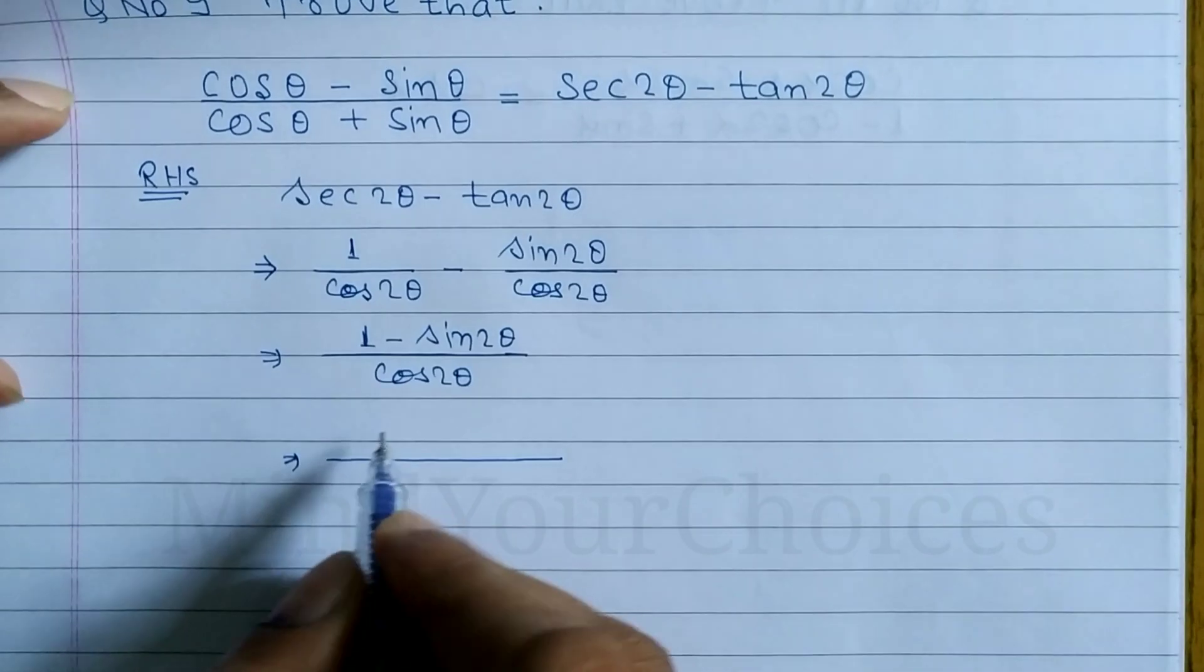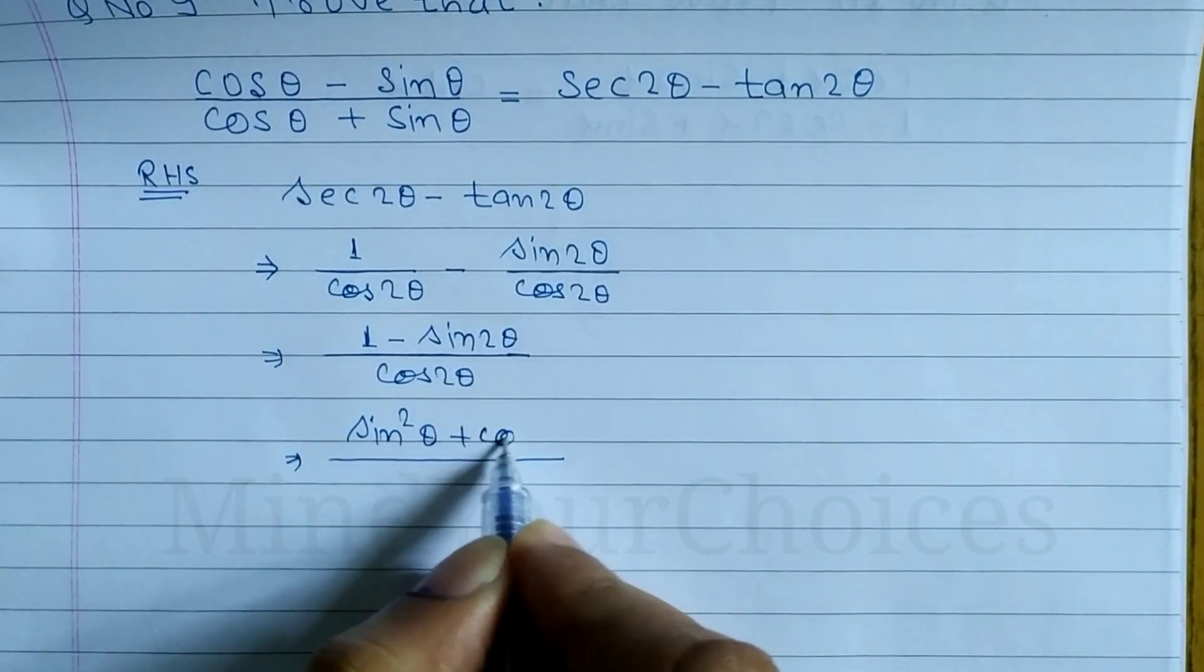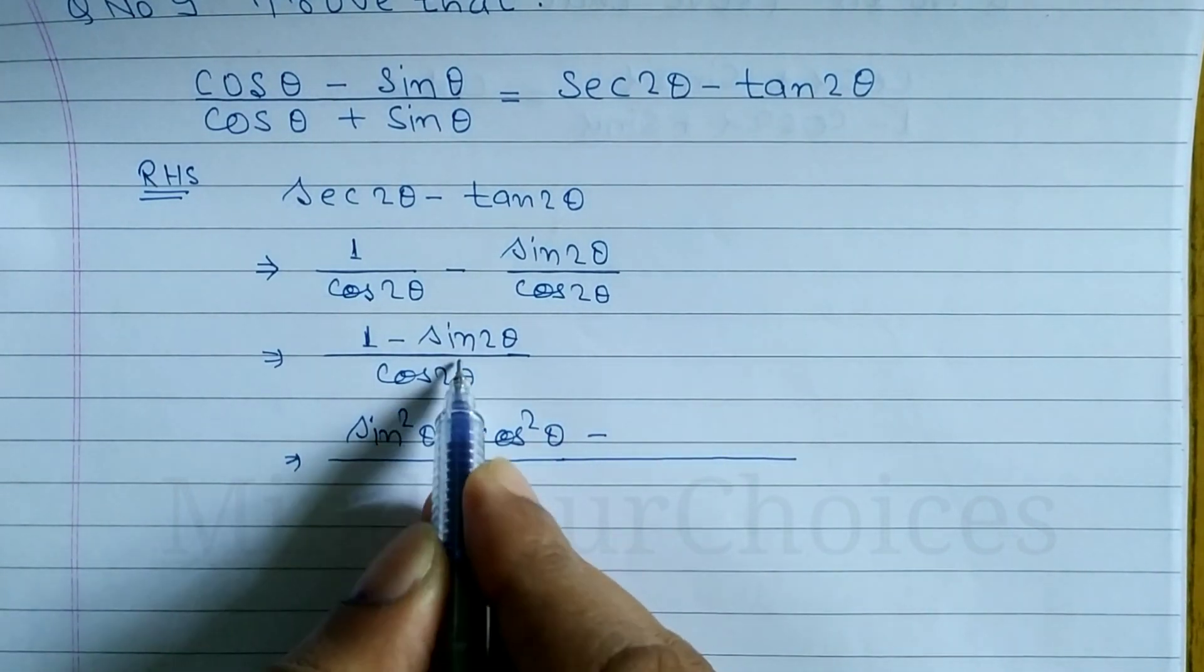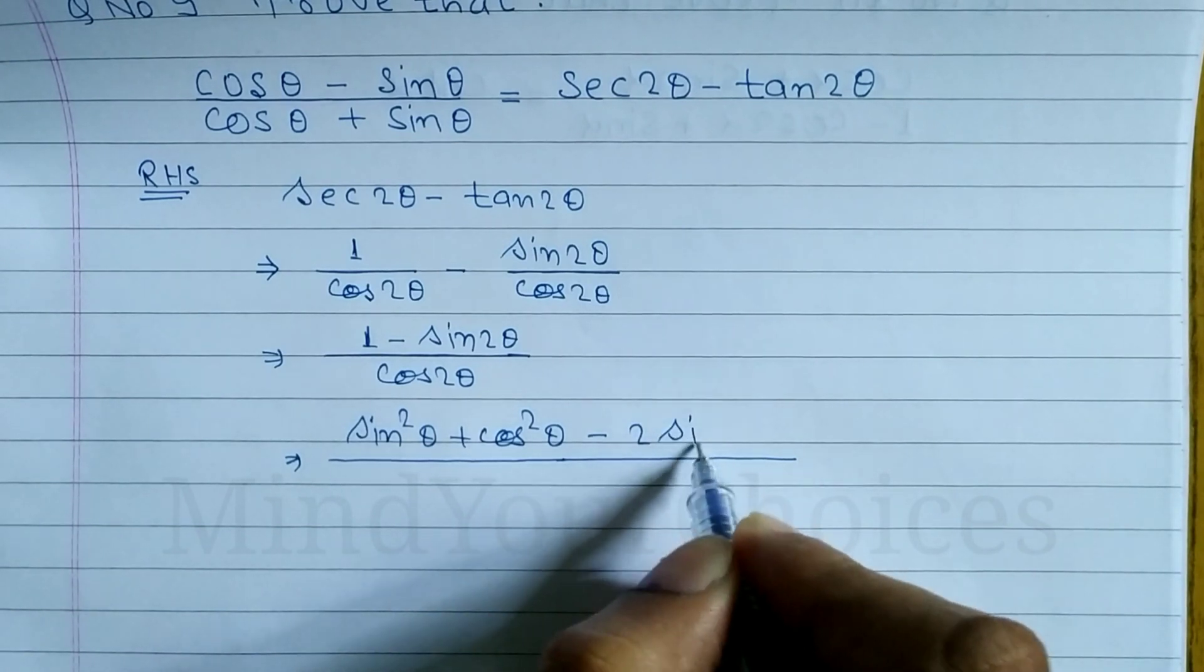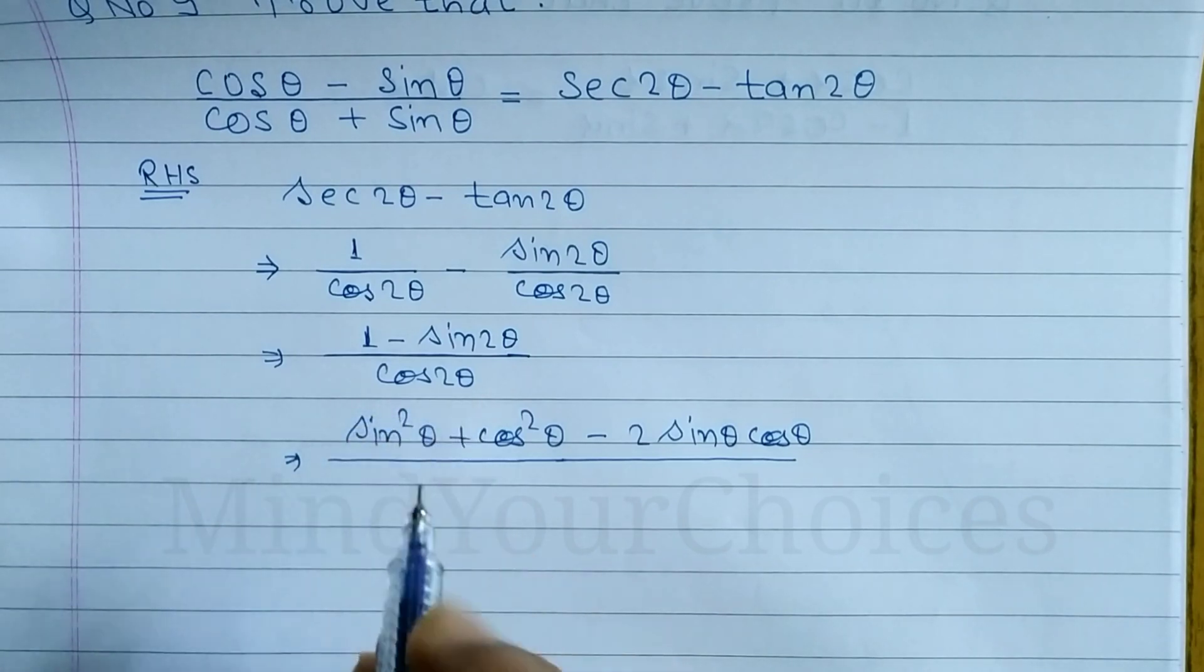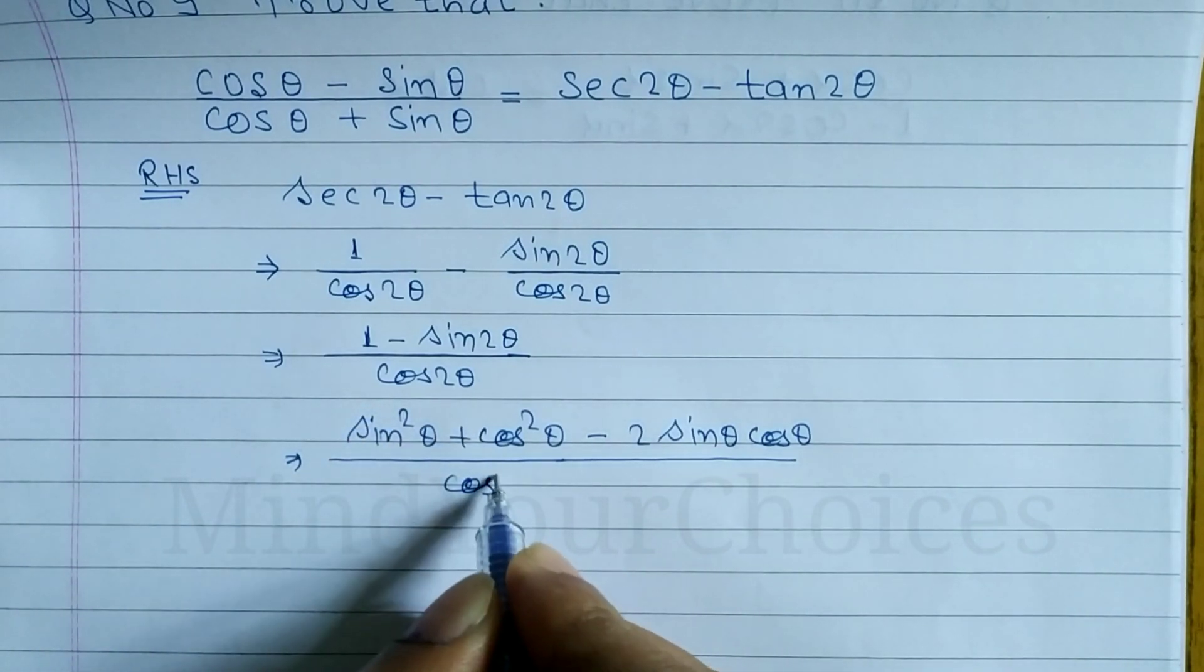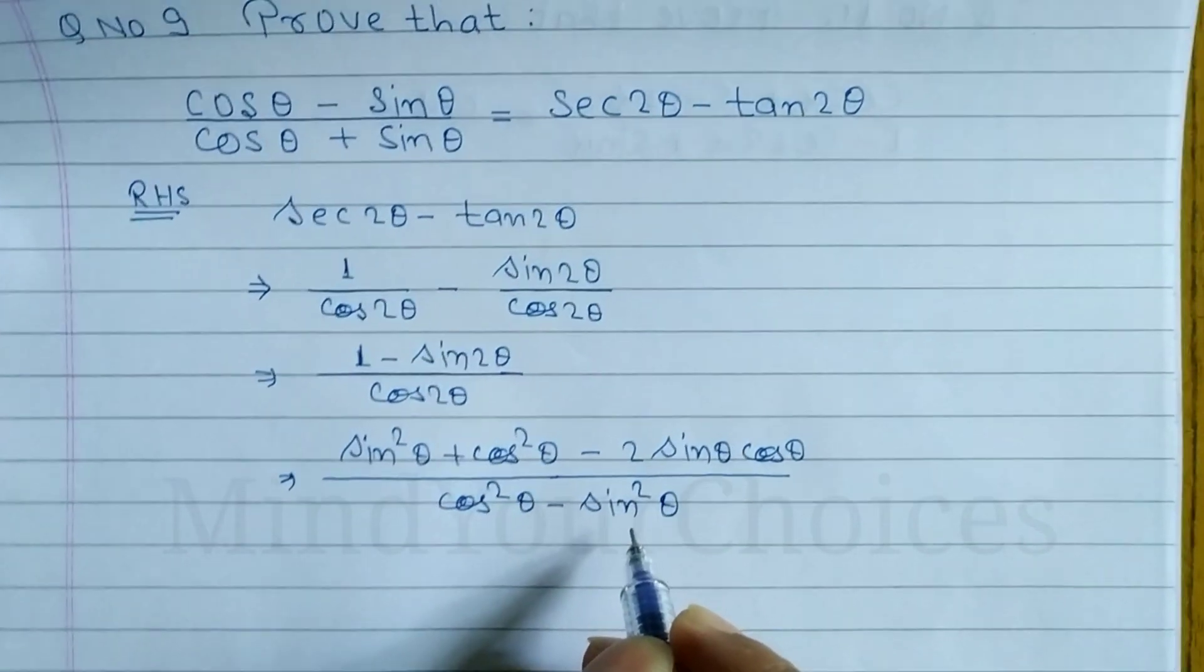In the numerator, we have sin squared theta plus cos squared theta. Using the formula 2 sin theta cos theta, we can write cos squared theta minus sin squared theta.